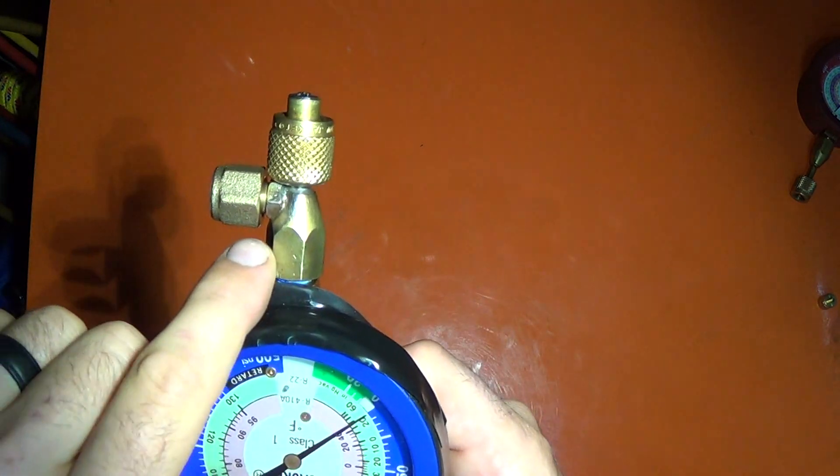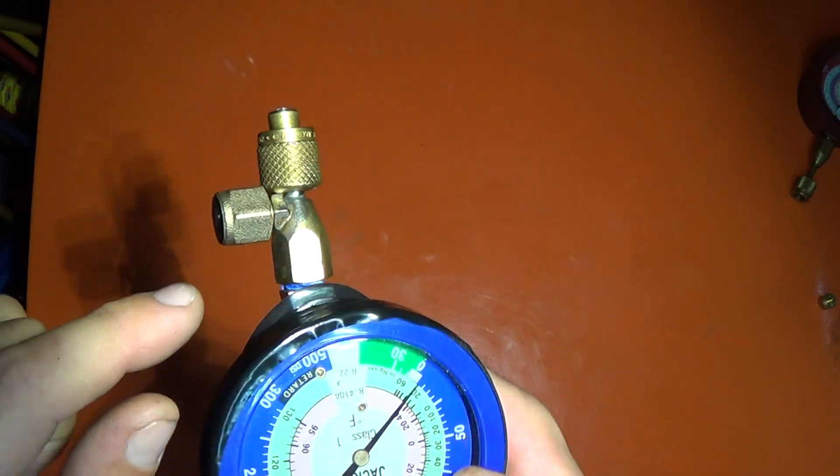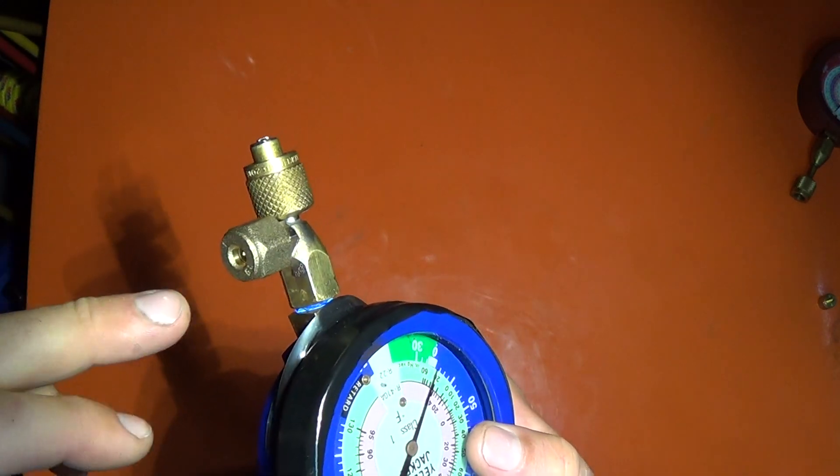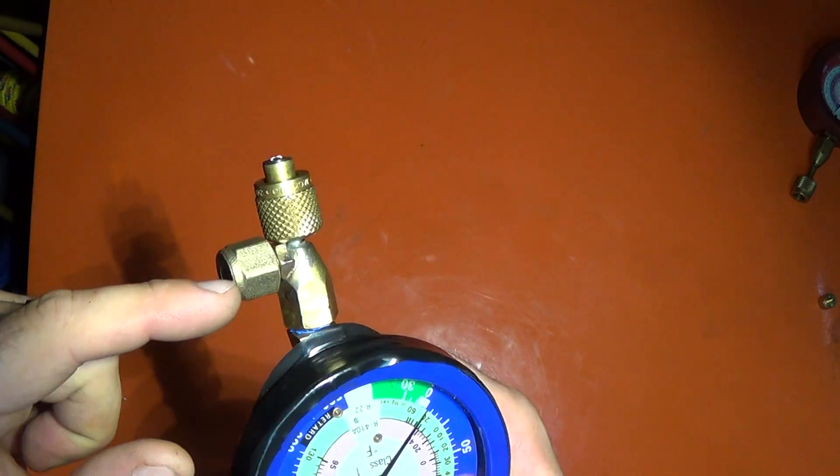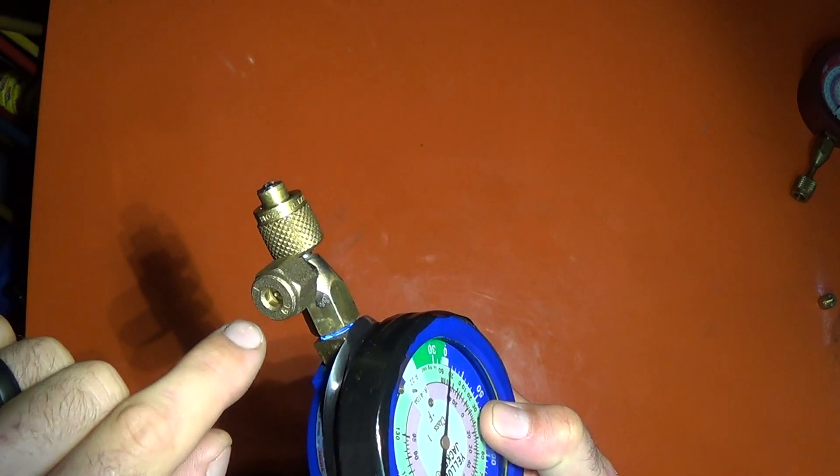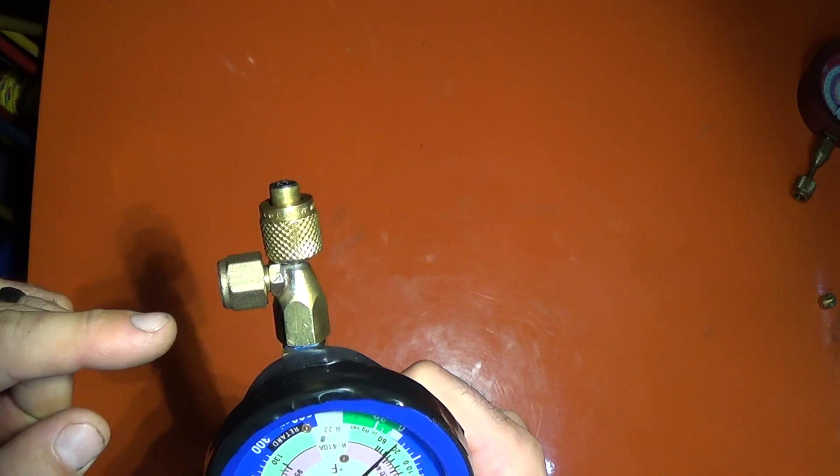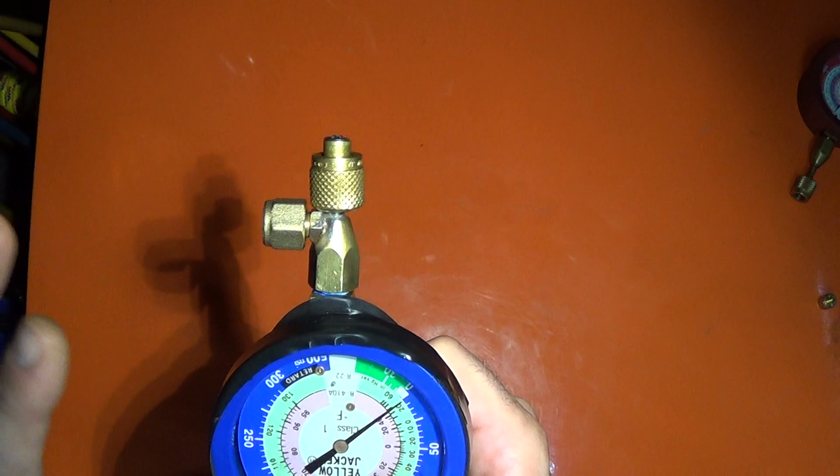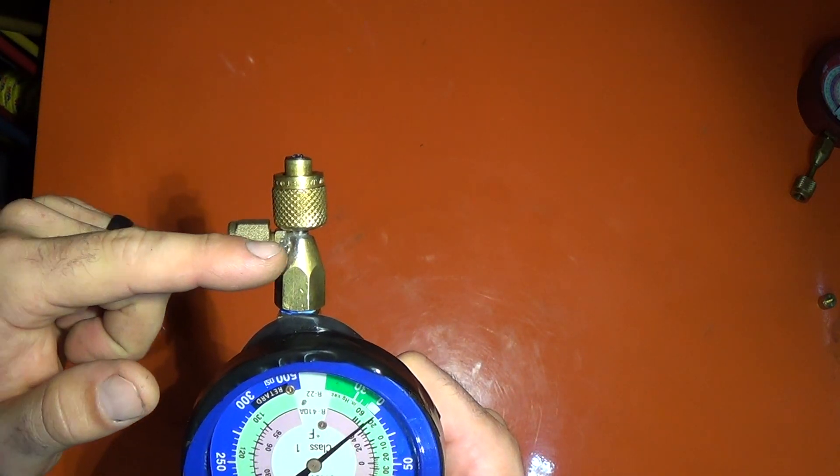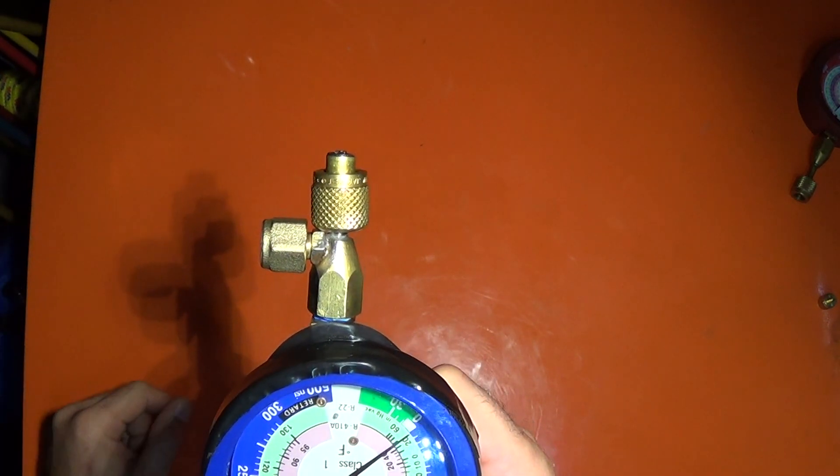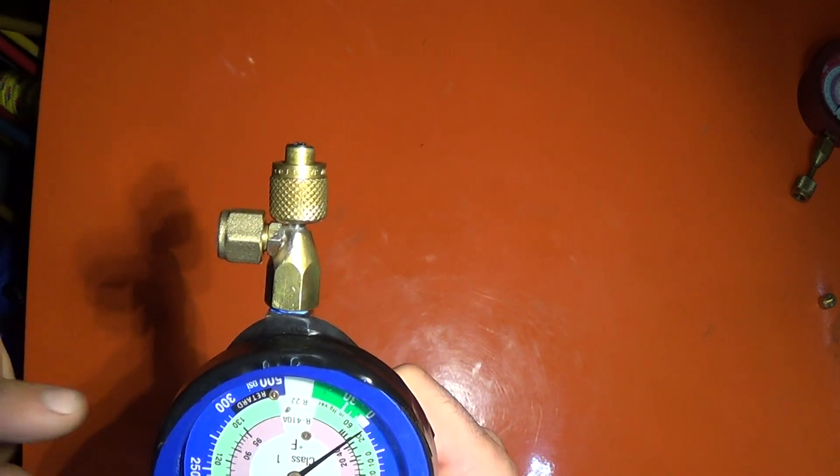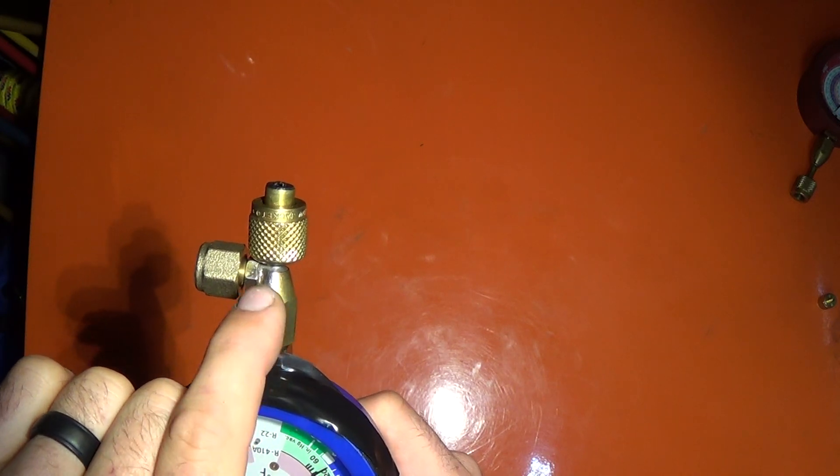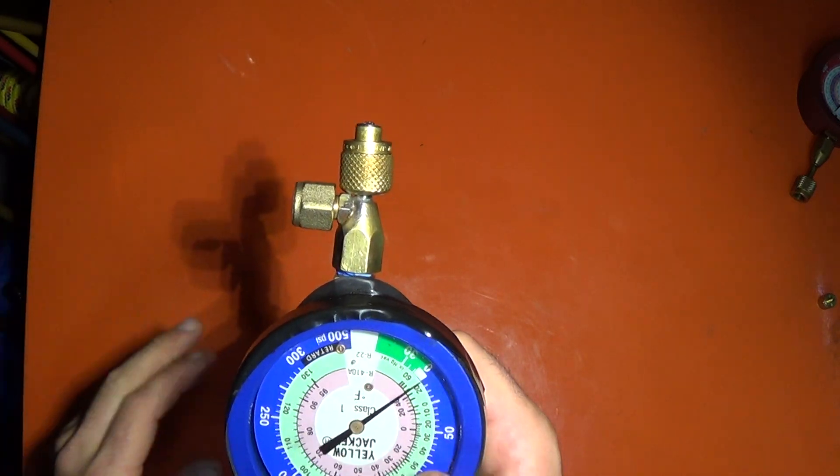So once you've got this braised onto here, then I take, obviously you've got the core out because you're braising. Then you take a drill bit that's small enough so you can get it in that hole. Then you drill your hole. I wouldn't drill the hole first and then try to get this lined up on the hole. Just get it braised on there, then drill your hole through. And once you drill through, you might have to drill through this way to knock out the burrs that are in there.